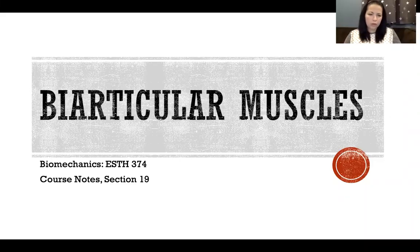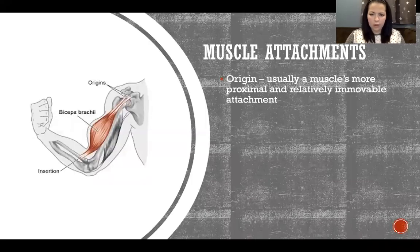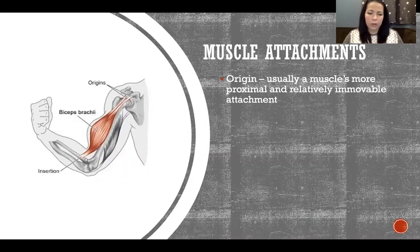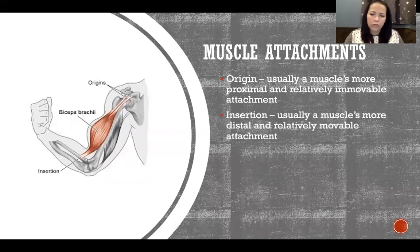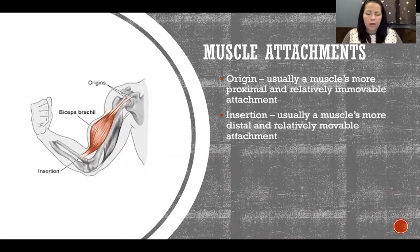In this video I'm going to talk about biarticular muscles. Starting with muscle attachments: a muscle has what we define as its origin and its insertion, which are just the attachments of the muscle on either end.